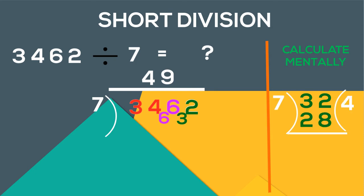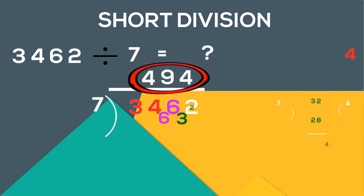Next, 7 goes 4 times with the remainder of 4. Our answer is 494 with the final remainder 4.